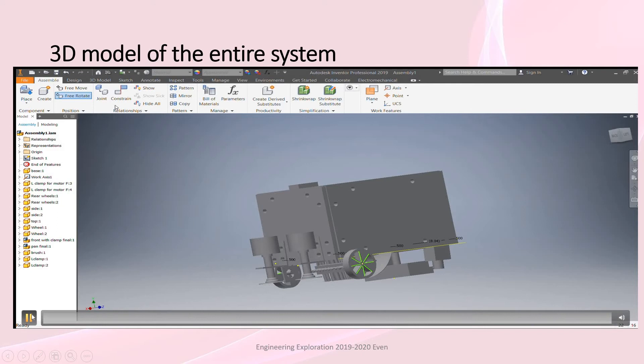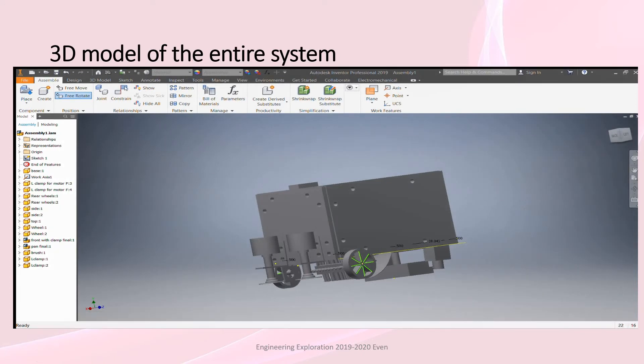We use the Autodesk Inventor Professional software. It has the view from all the sides of our model. In front, we have two brushes, two wheels. Beneath, we have a brush, inclined plane for the pan, a mop.